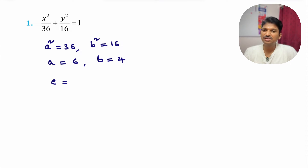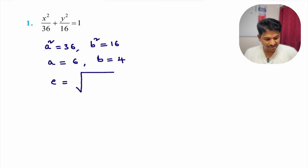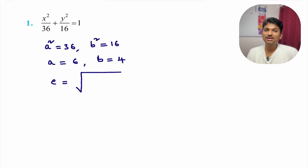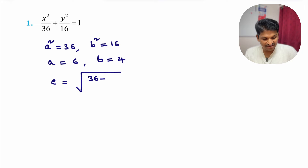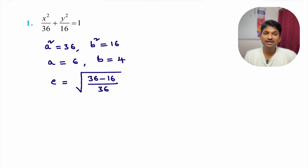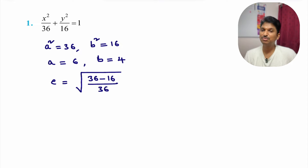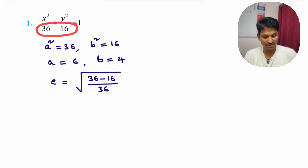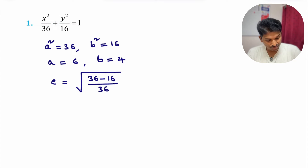After identifying the type, calculate eccentricity before proceeding further. In ellipse, mainly three things will be there: a, b, and e. For eccentricity, here is a trick: take root over (bigger number minus smaller number) divided by bigger number. This works for both first type and second type. So we use 36 (bigger) minus 16 (smaller) divided by 36, and simplify.